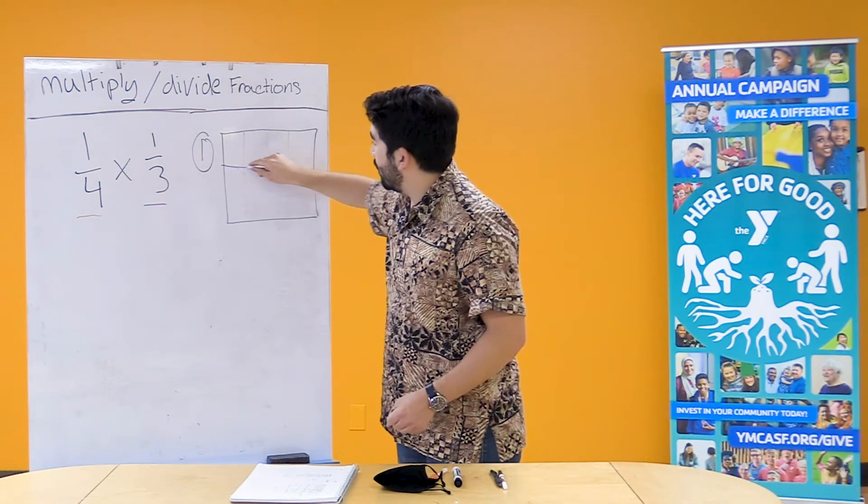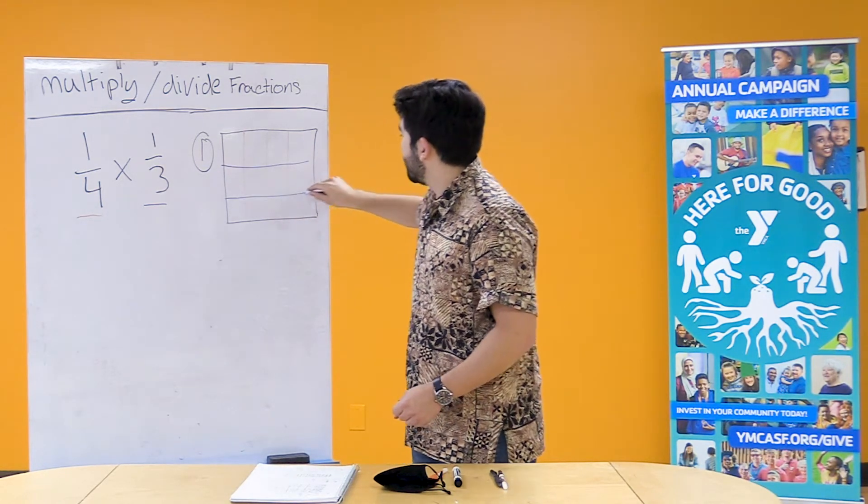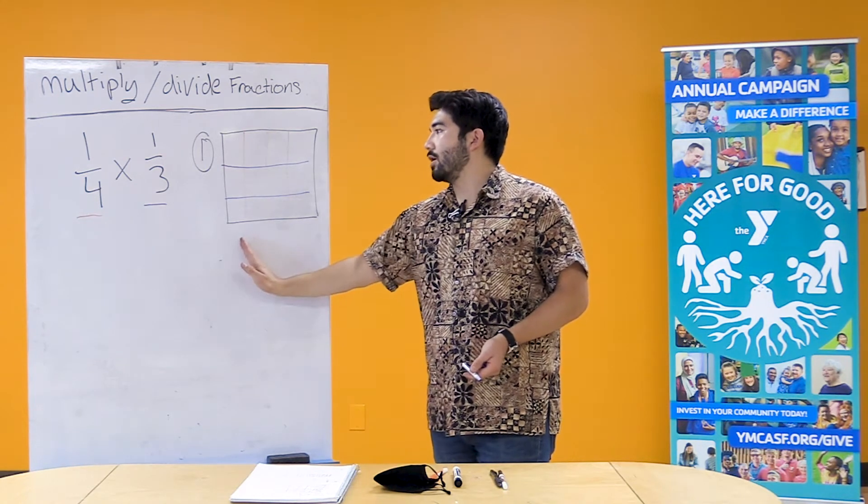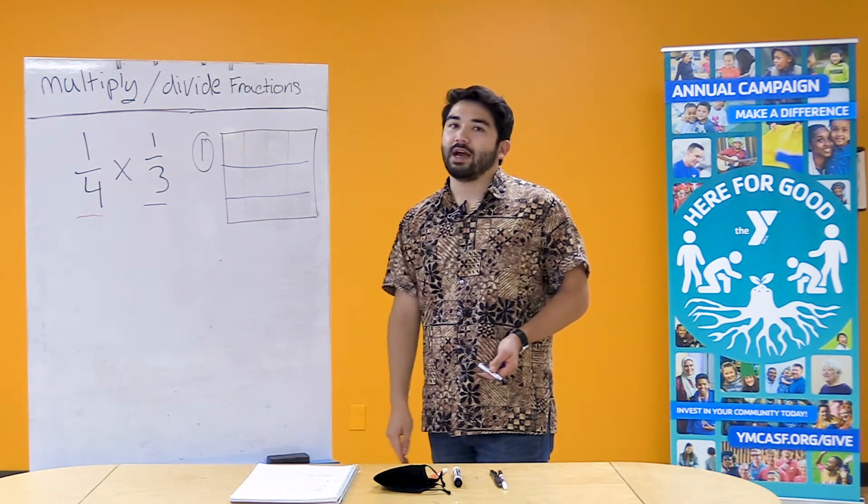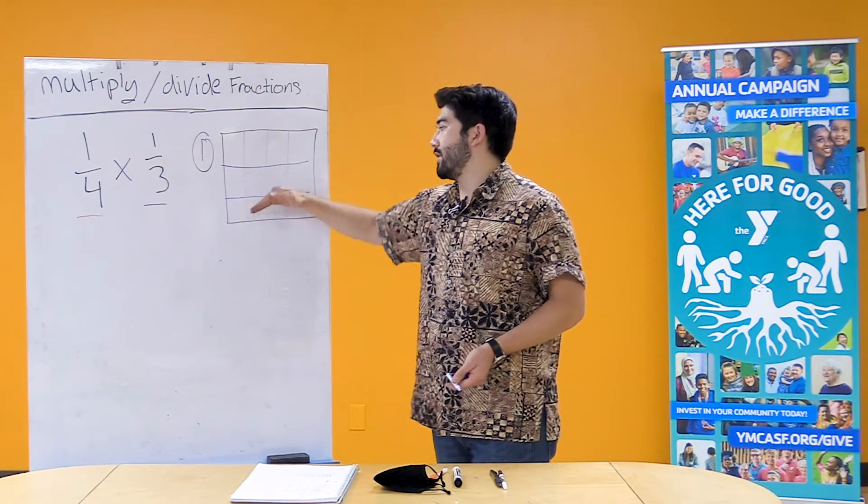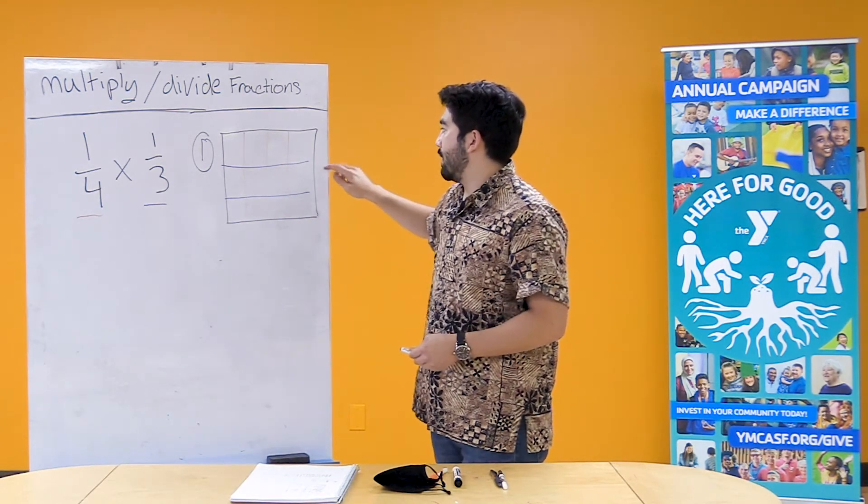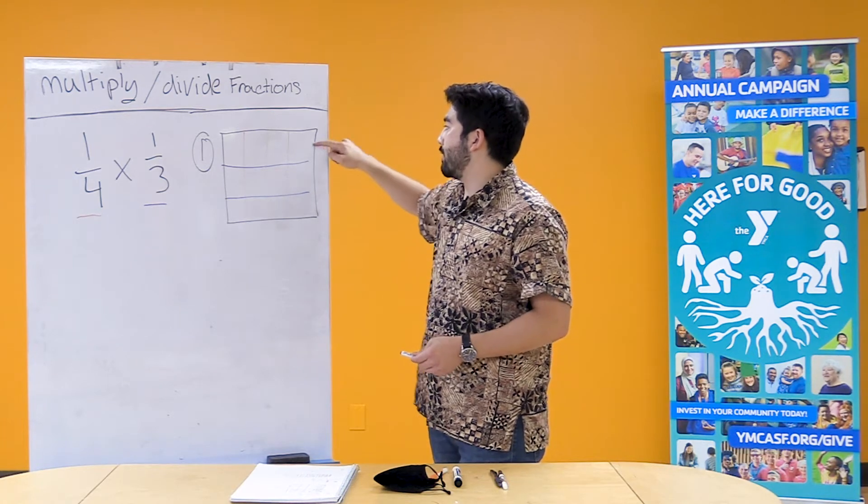So I'm gonna break our one whole into three different boxes. It's very important to have our two different fractions break up to go in different directions so that we can see them more clearly. So as you can see here I drew two lines which made our one whole into thirds.